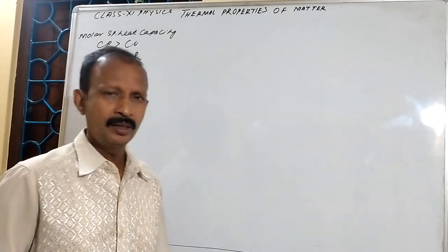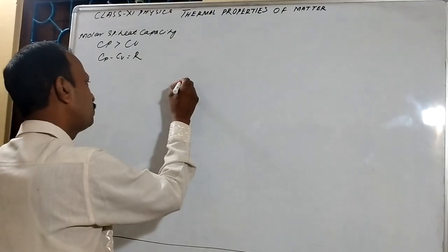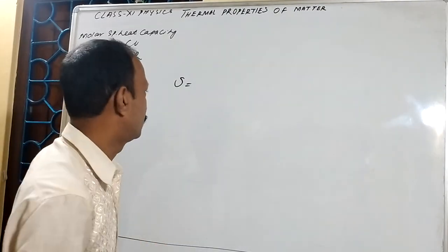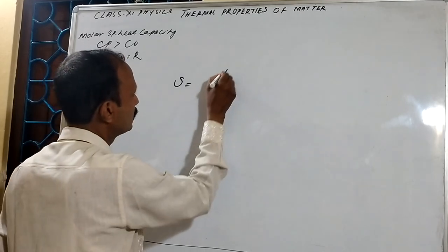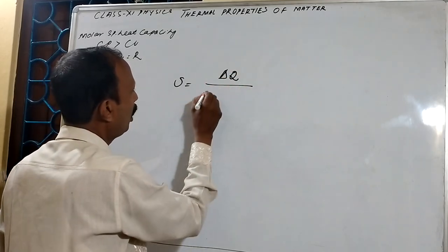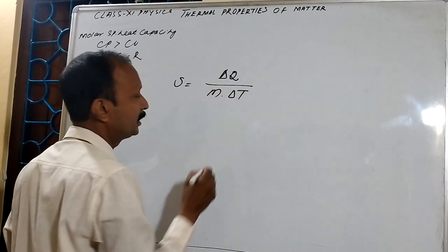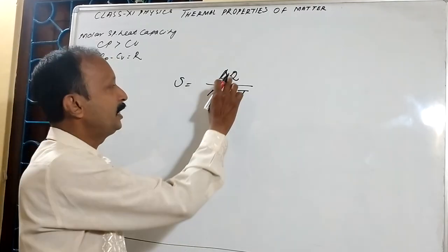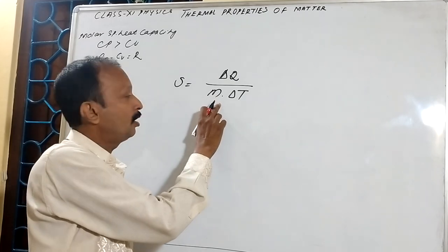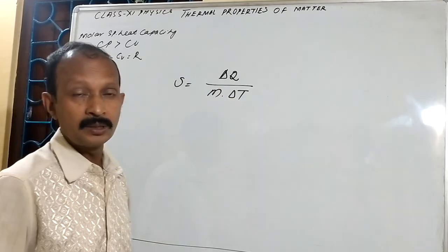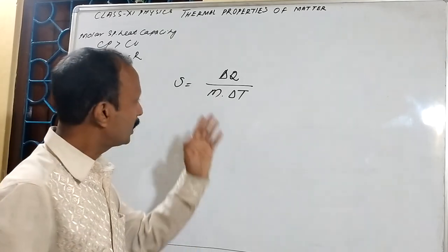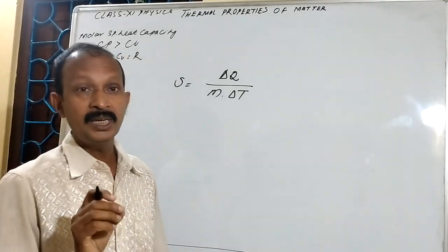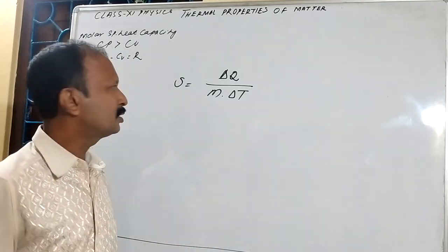In the previous video, I explained about the specific heat capacity. The formula I mentioned is delta Q upon N into delta T. That means, specific heat capacity is defined as the amount of heat required to raise the temperature of unit mass of a substance by unit. That is the matter we discussed in the previous video.